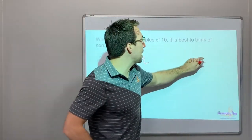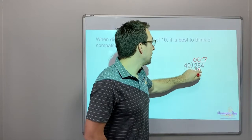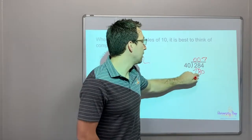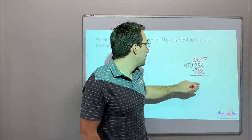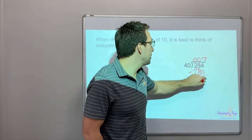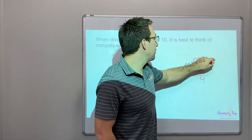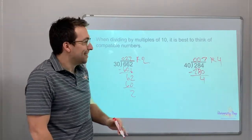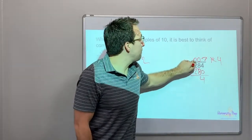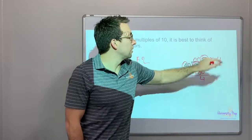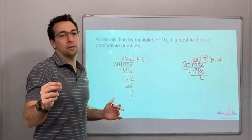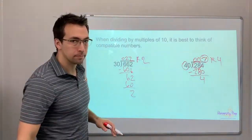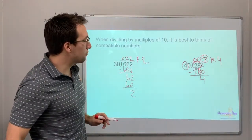40 times 7, that's 280. Okay. If we subtract, that would just be a remainder of 4. 7 remainder of 4. How awesome is that? So if you look for compatible numbers, it will help you in multiplication. Okay? Always. 7 remainder 4.